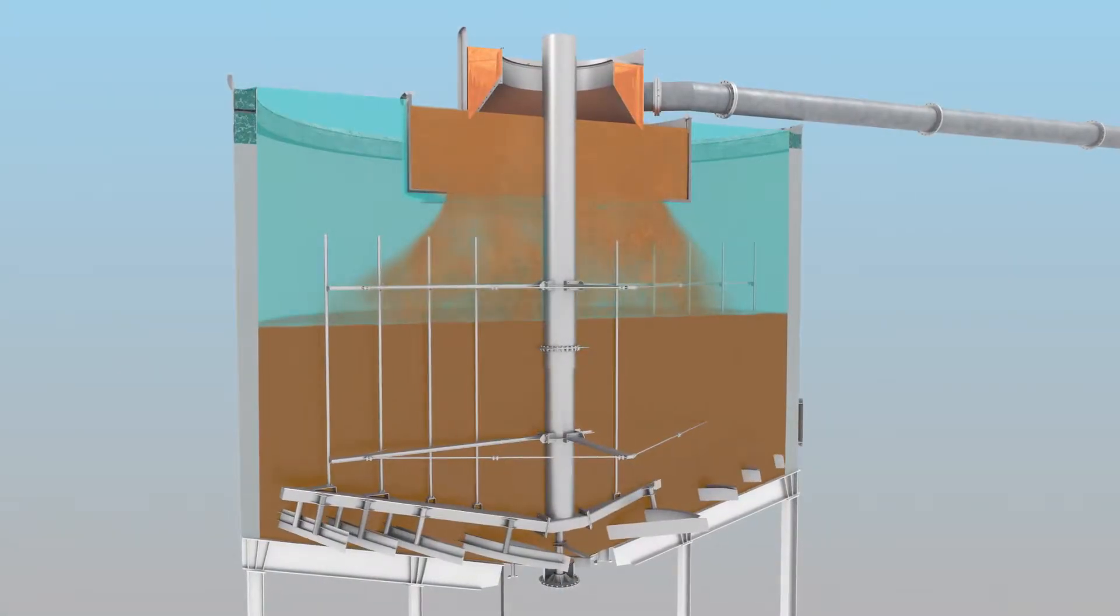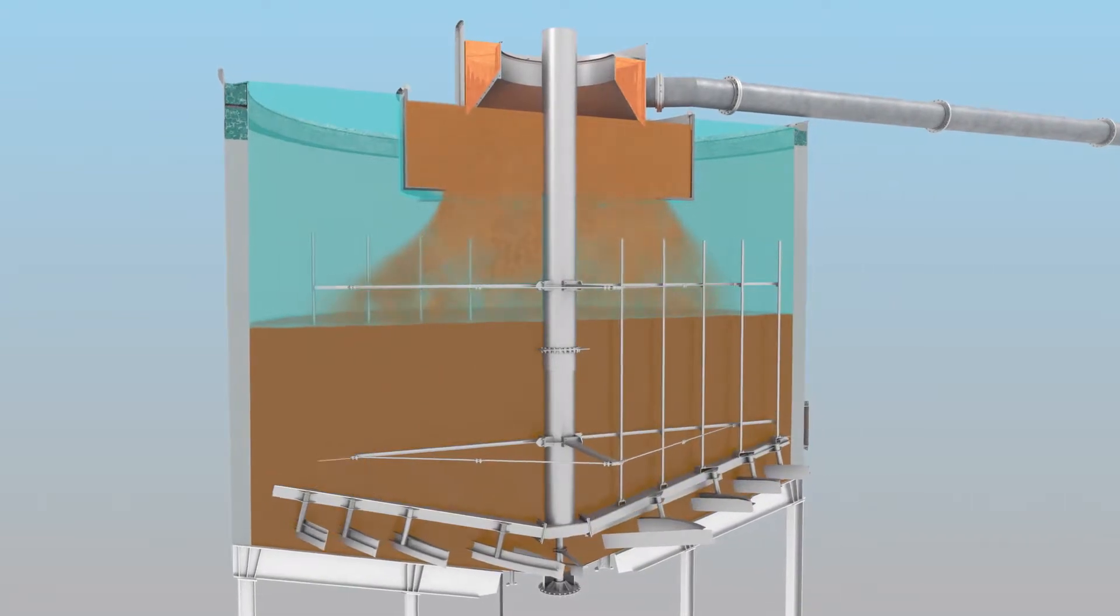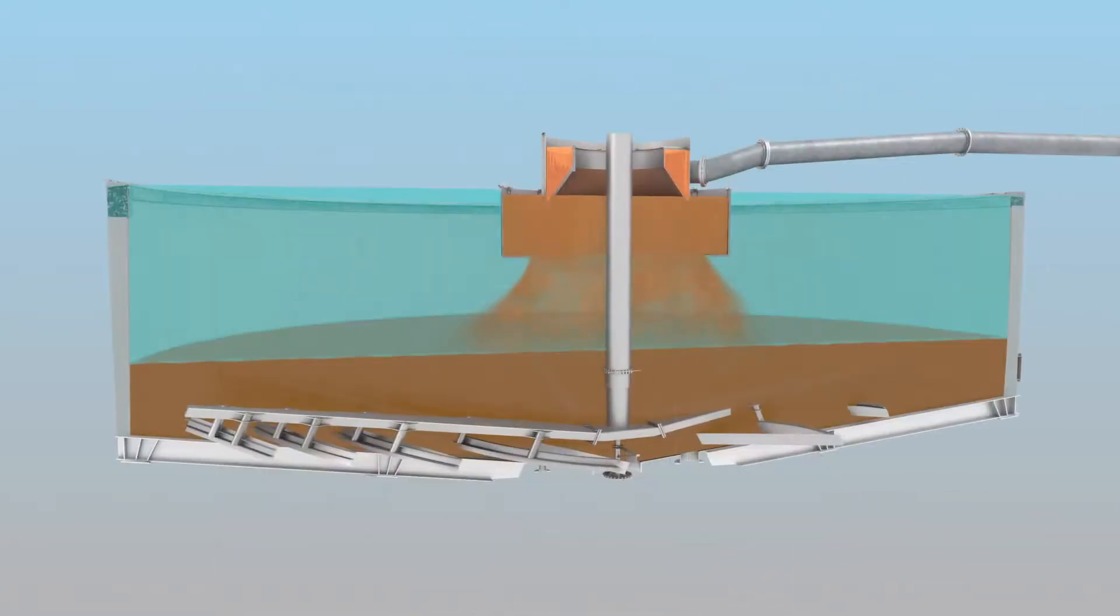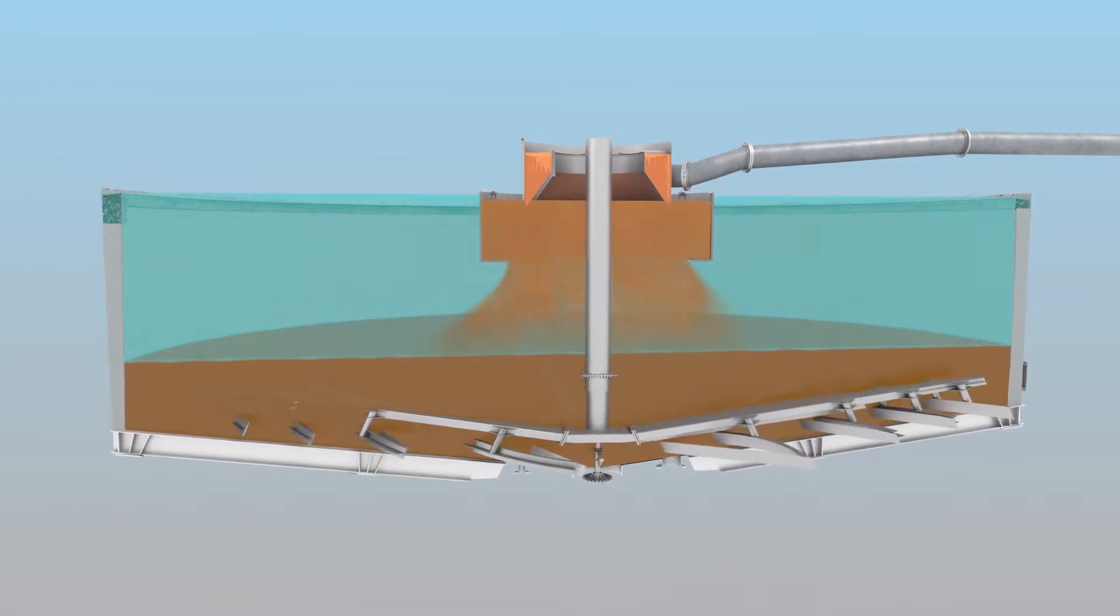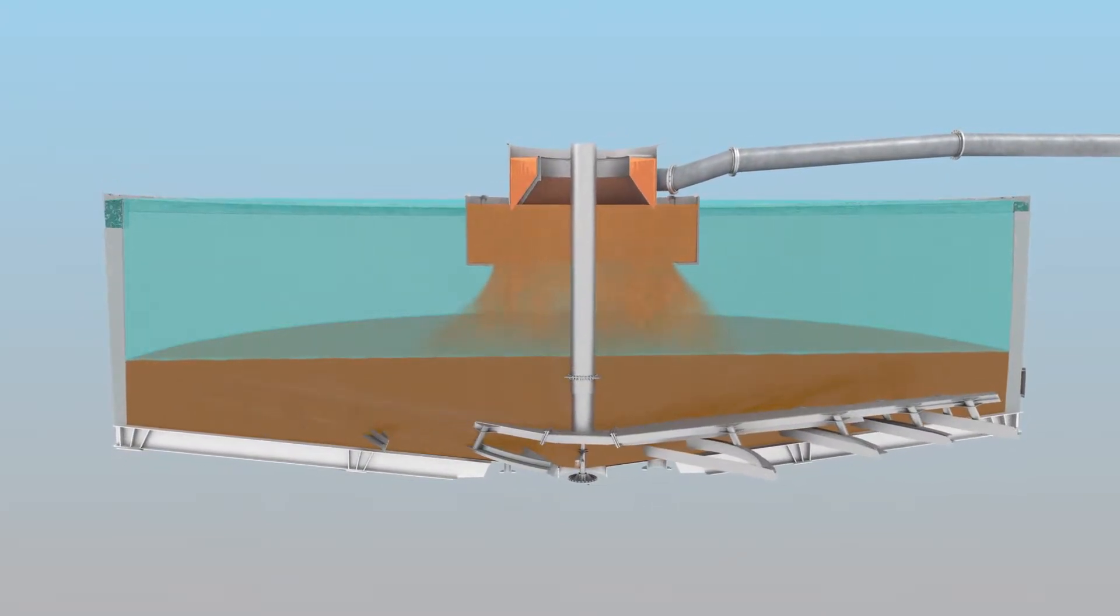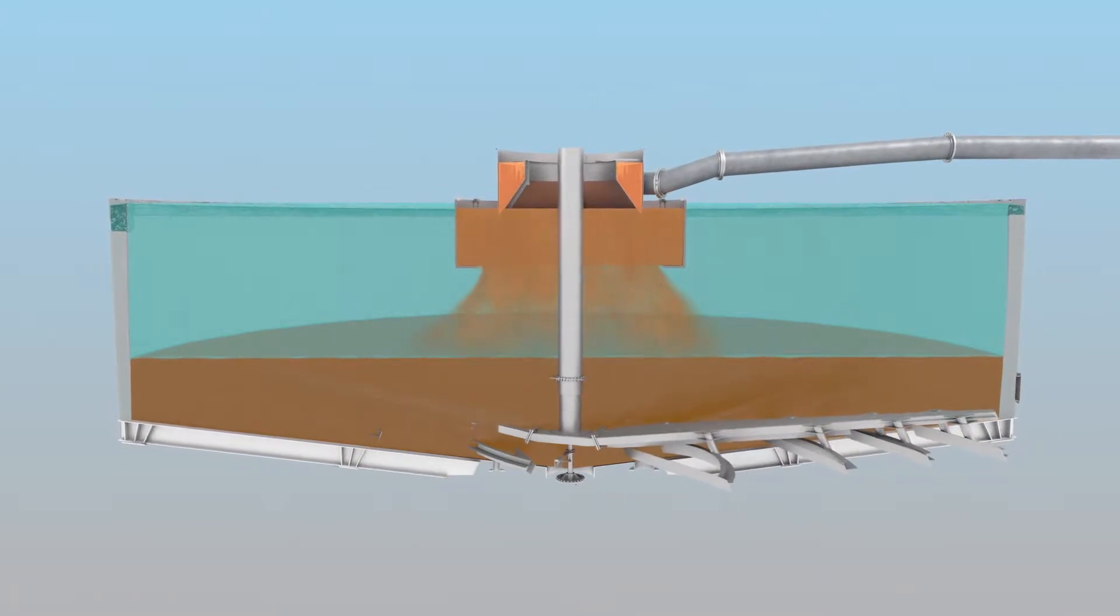Thickeners are the primary piece of equipment that plants use to separate liquid from solids. Despite the apparent simplicity of thickeners, controlling them to achieve steady-state operation has been a major challenge.